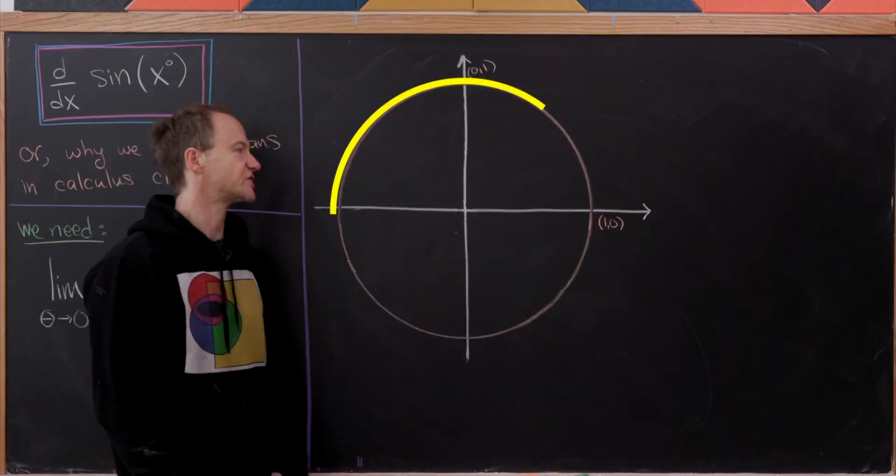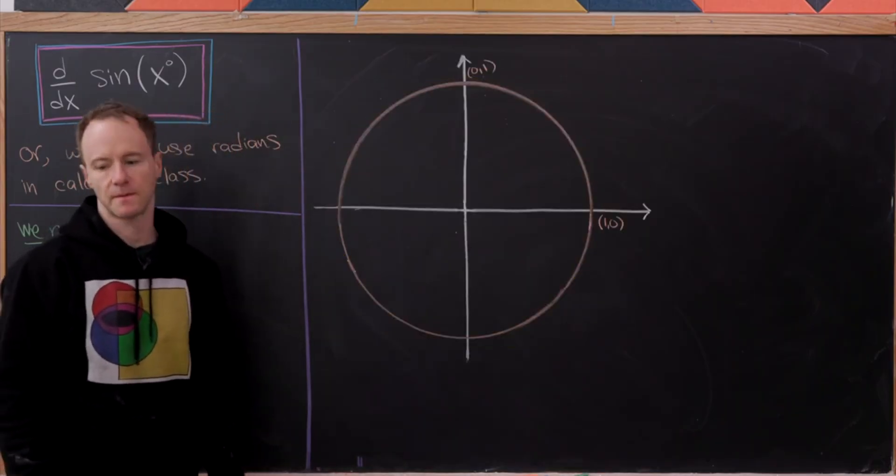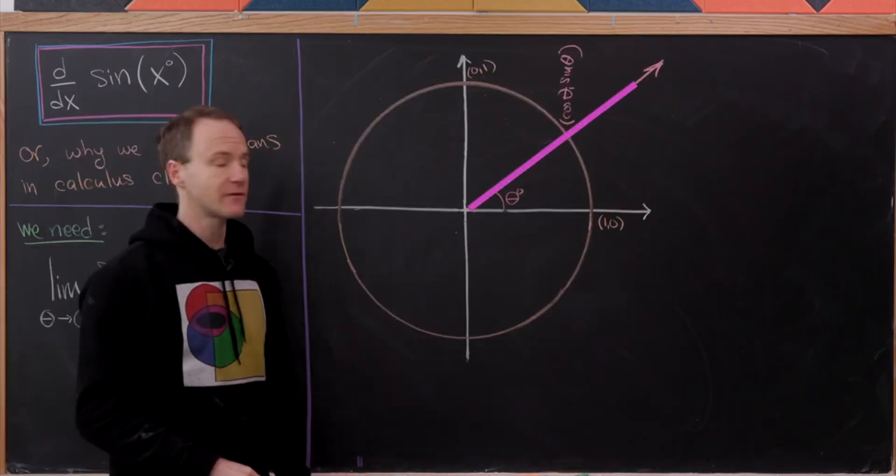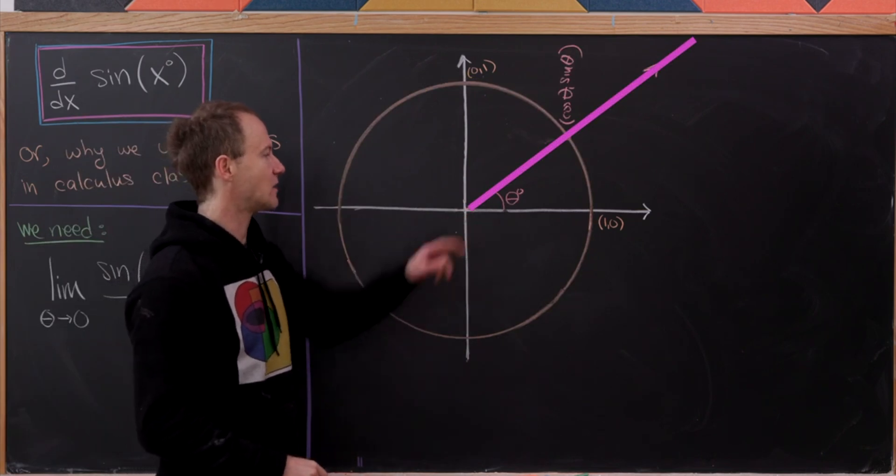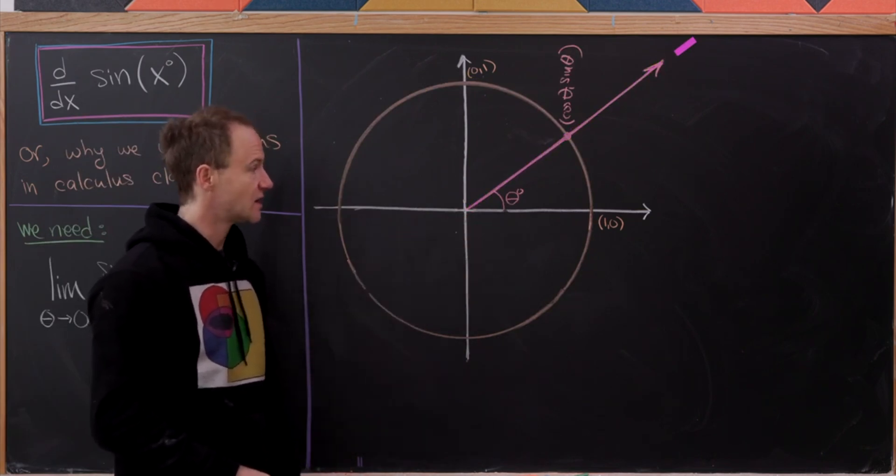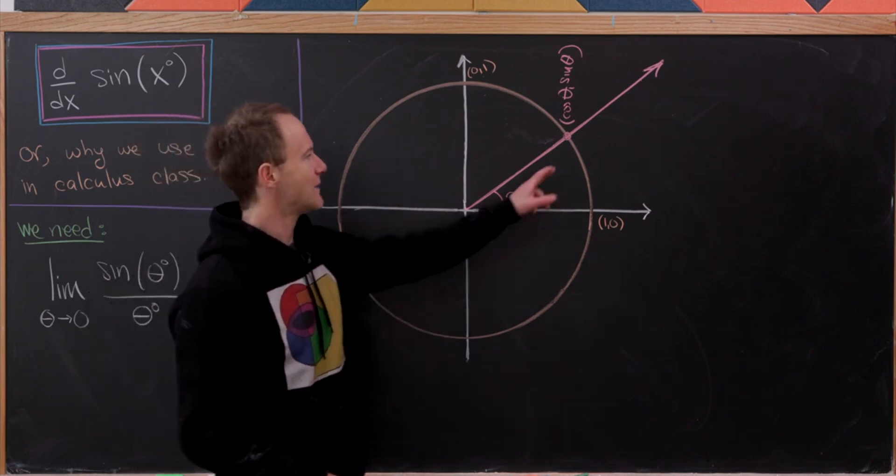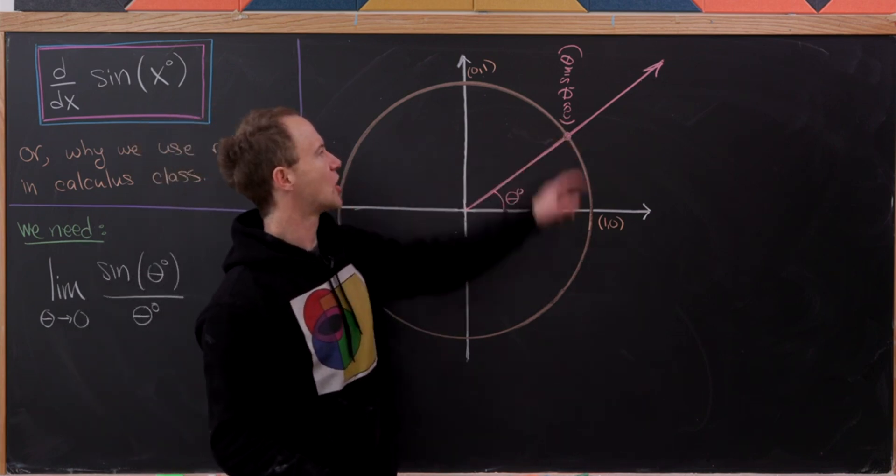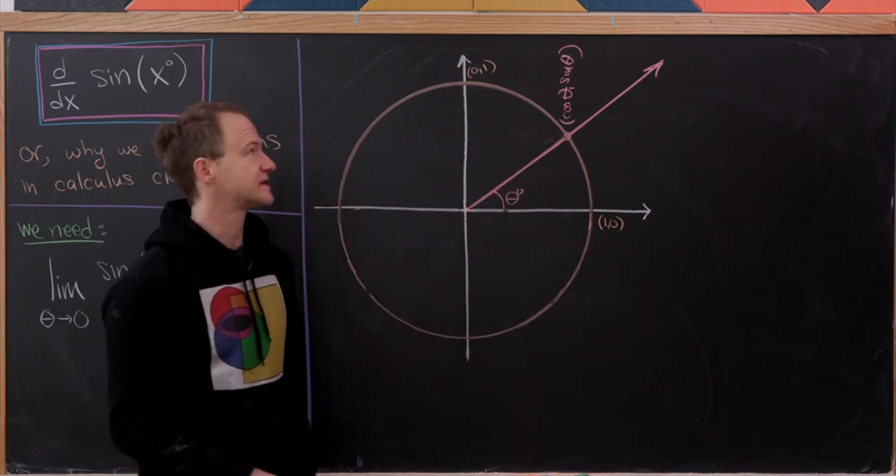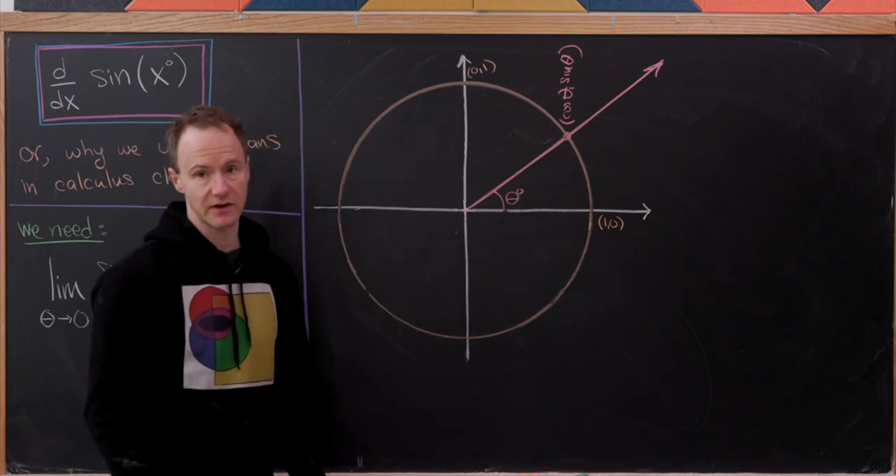So our picture is going to start with the unit circle. Next we'll make a ray emanating from the origin that makes an angle of theta degrees from the positive x-axis. So that makes this point up here cosine of theta degrees comma sine of theta degrees.